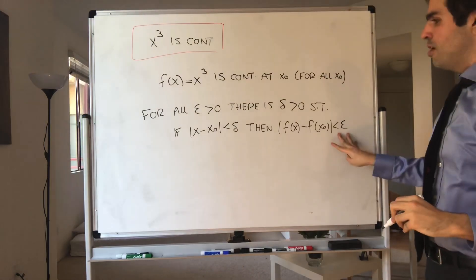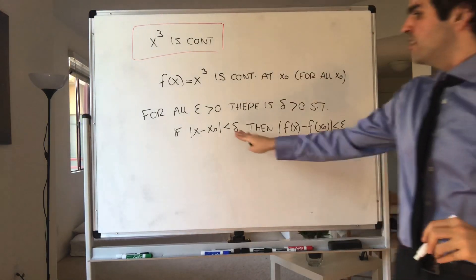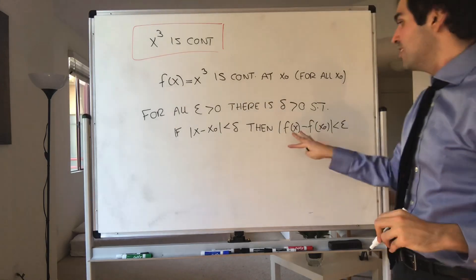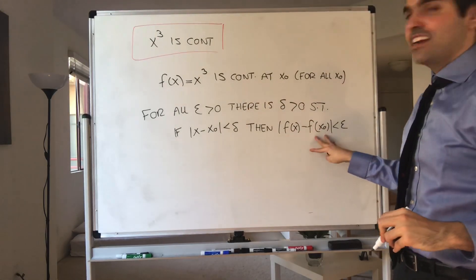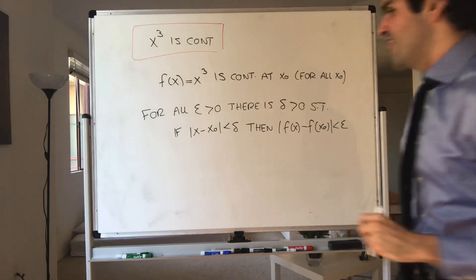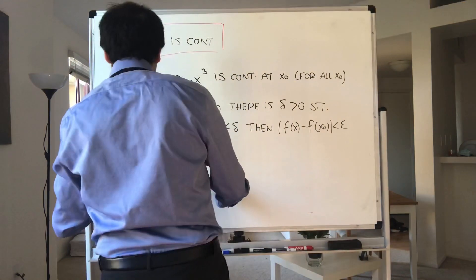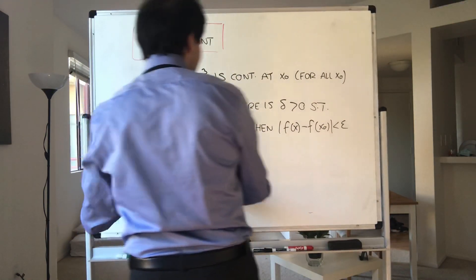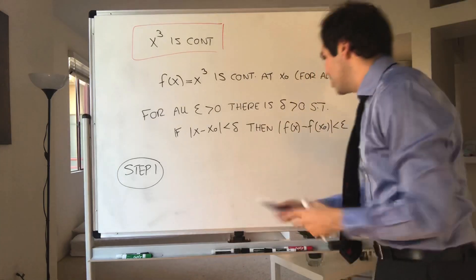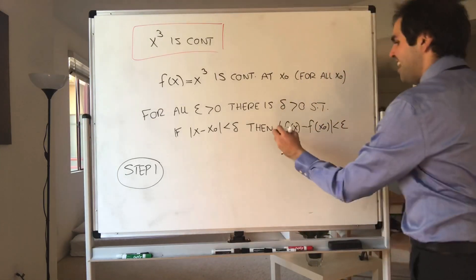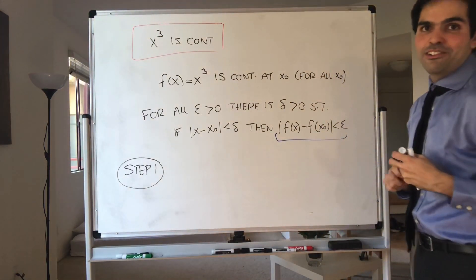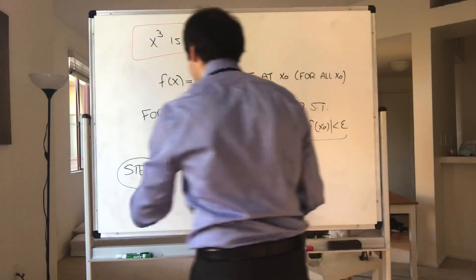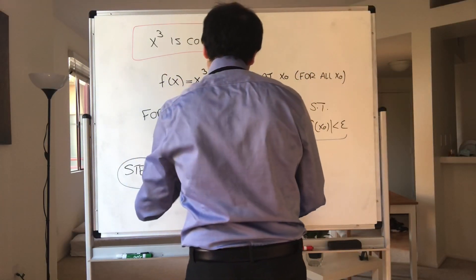So no matter how small the error, there is some threshold such that if x is close enough to x naught, then f of x is close enough to f of x naught. And first step — as usual, you start with this equation and you try to find delta. That's the key memo of math: find delta.